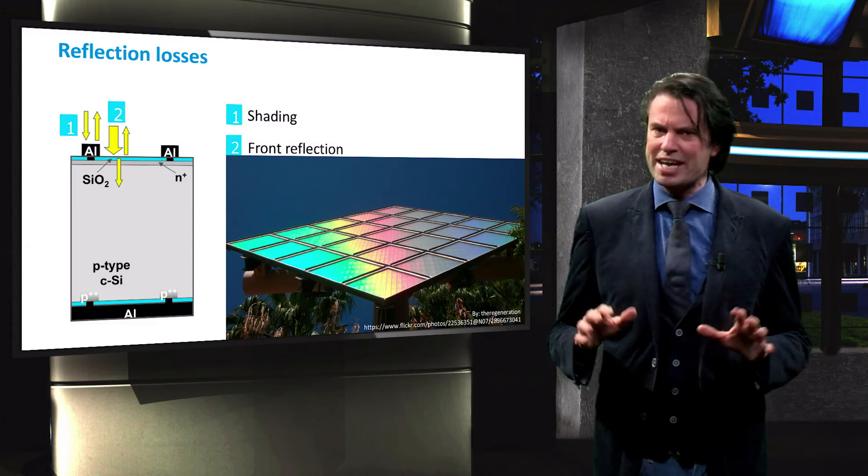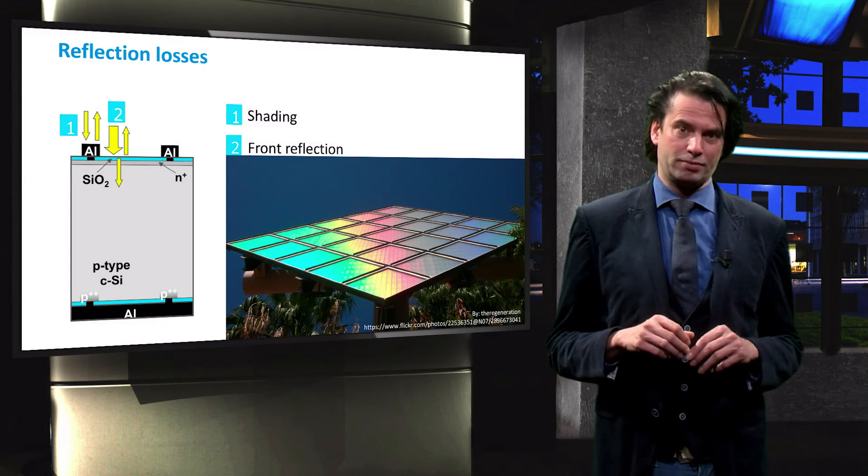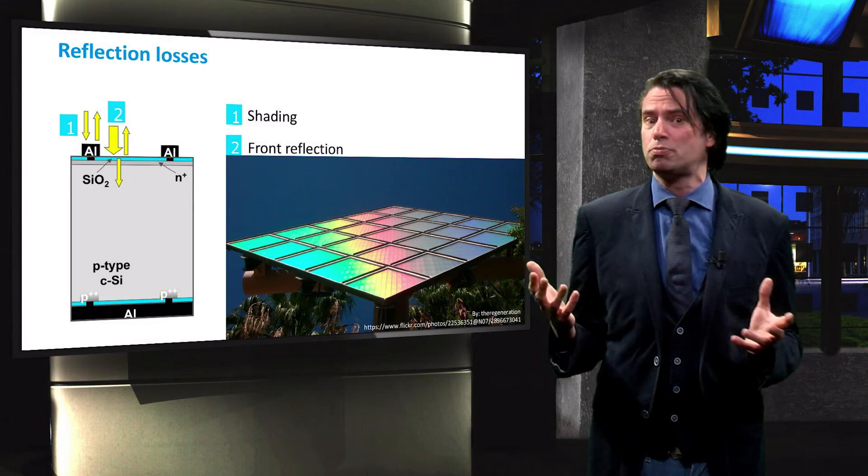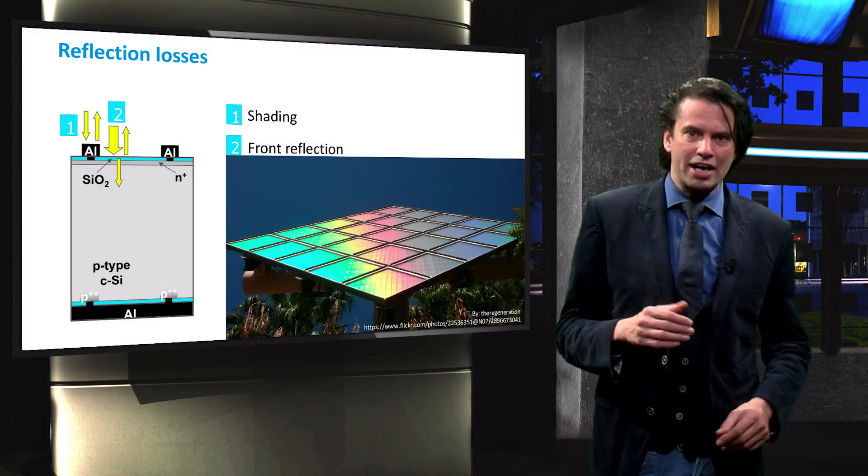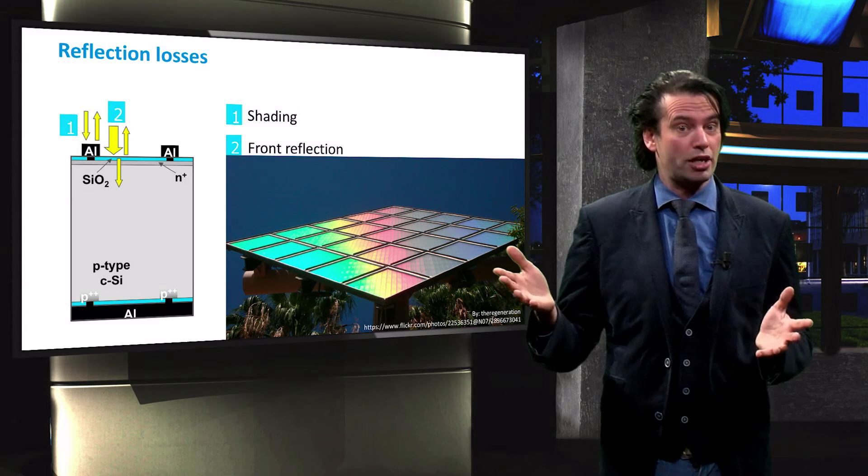The glass plate used to encapsulate the solar modules reflects a fraction of the instant light. Even though silicon oxide is highly transparent to the visible light, it is not completely so. Any light reflected off the solar cell surface will not contribute to charge carrier generation.